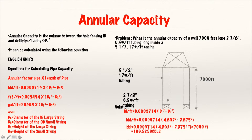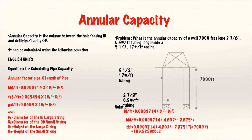Next, let's calculate the annular capacity. Annular capacity is the volume between the hole or casing ID and the drill pipe or tubing OD. You can calculate it using the appropriate equation, or use your field data book to get the annular factor for your pipe, casing, and tubing combinations. Compared to total capacity, here you subtract — using the ID of the large string minus the OD of the small string. This is similar to finding the volume of a hollow tube.